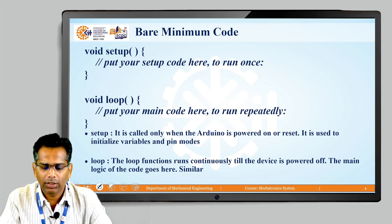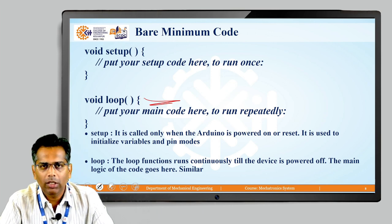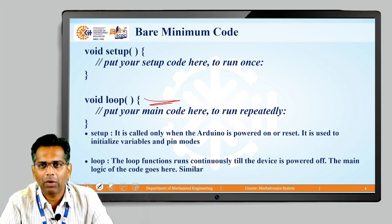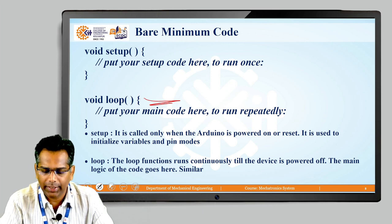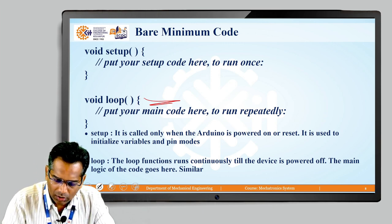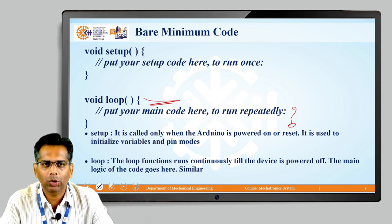The second function is the loop section. The loop function runs continuously until the device is powered off. The main logic of the code goes here — whatever the main program is, write it in this section, where it can run repeatedly until you stop the Arduino.